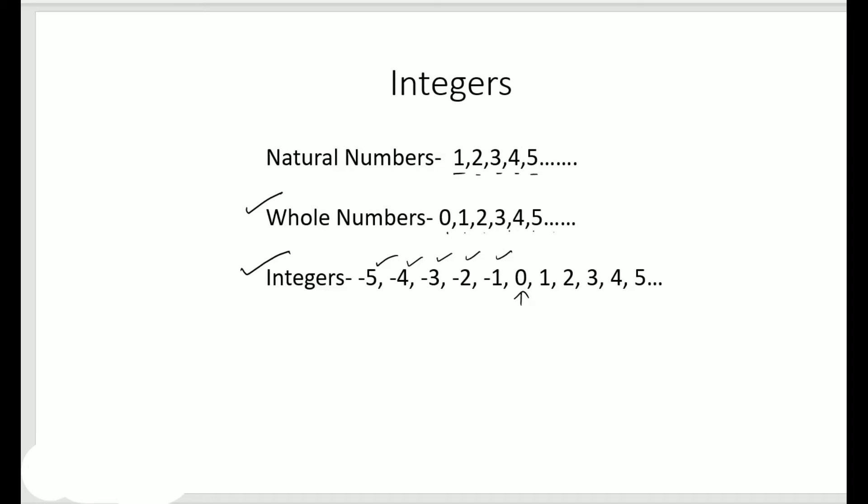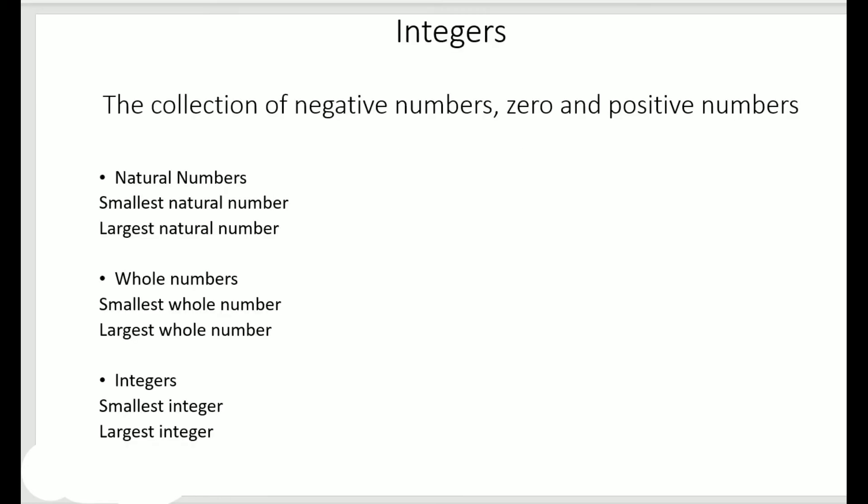Some students find it difficult to remember from which number natural numbers or whole numbers start. The easiest way: if you are asked to start counting, you would say one, two, three, four — you would not say zero, one, two. So something which comes naturally to you is our natural numbers, and if we add zero to this set it becomes our whole numbers.